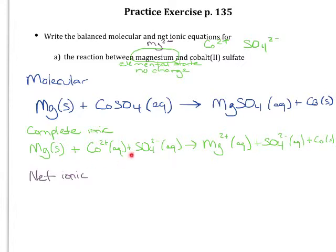Same thing happens for the cobalt. It goes from being charged to its elemental state. So that is different. But the sulfate stays exactly the same on the reactant side and product side. So that is a spectator ion and that will not appear in our net ionic equation.